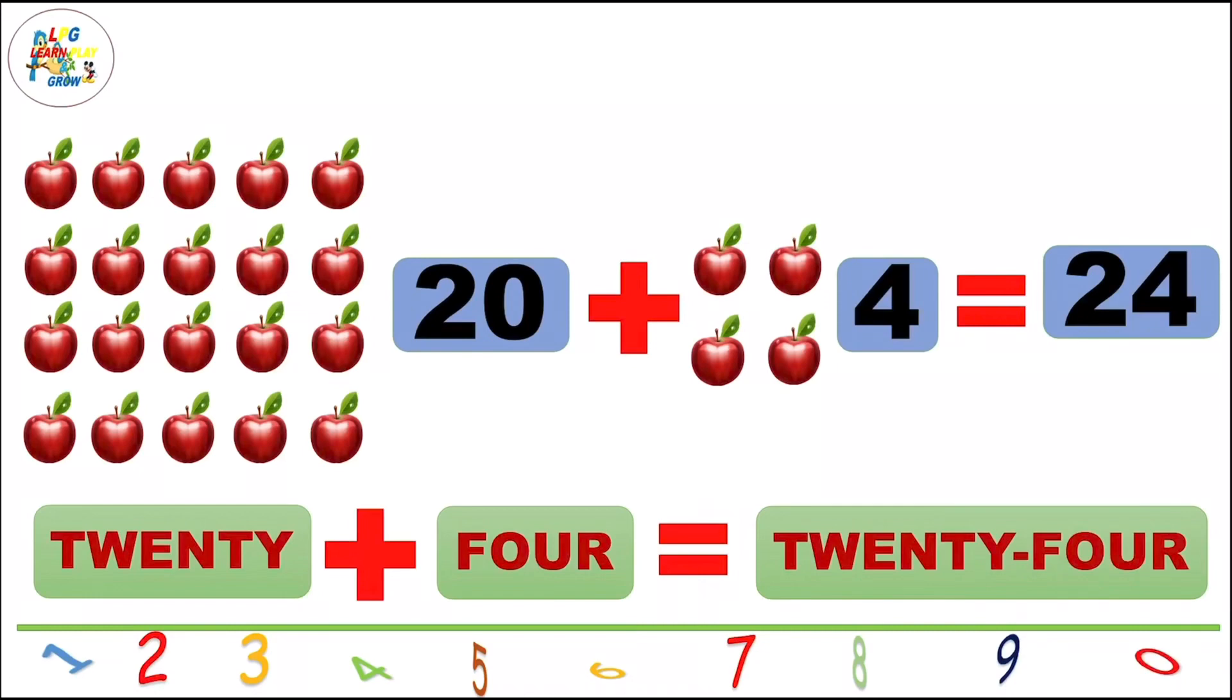20 plus 4 is equal to 24. Now, we learn the spelling of 24: T-W-E-N-T-Y, twenty, F-O-U-R, four.